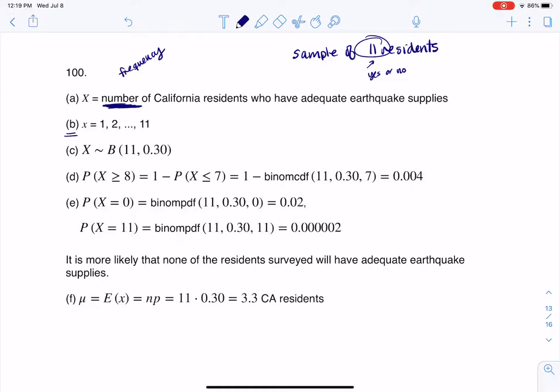Looking at part B, and I will change this so that when you download the solutions, it's correct. B is missing a number from its sample space. So if I talk to 11 residents, zero of them could have adequate supplies, one, two, all the way up to 11. There's an error in that there should have been a zero preceding the one, and I will change that.